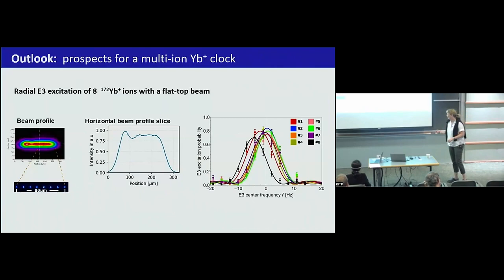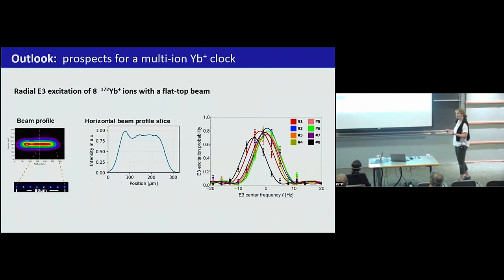But we're on the way, and at least I can tell you, at the level of 10 to minus 17, we have not seen anything suspicious for the multi-ion approach. The nice thing is, as an outlook and perspective, also ytterbium is a cool candidate. Here we have already excited eight ytterbium ions on the very forbidden octupole transition with 1.6 year lifetime. Also the quadrupole moment is actually very low in octupole.